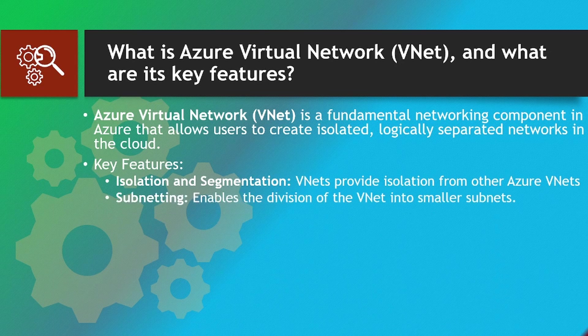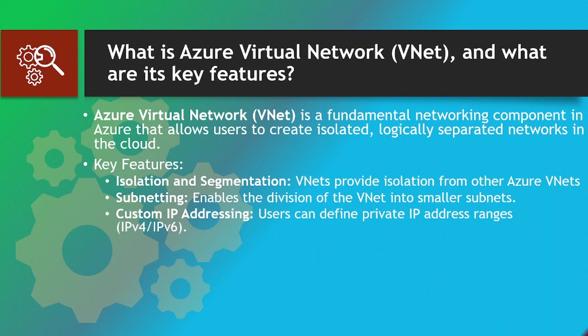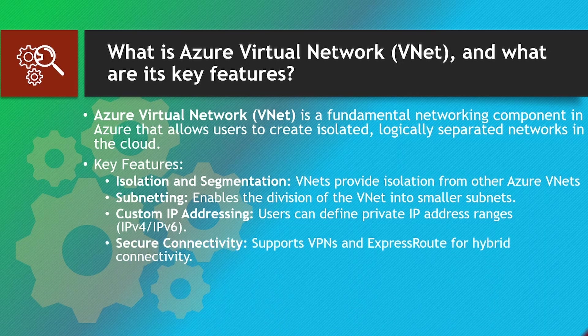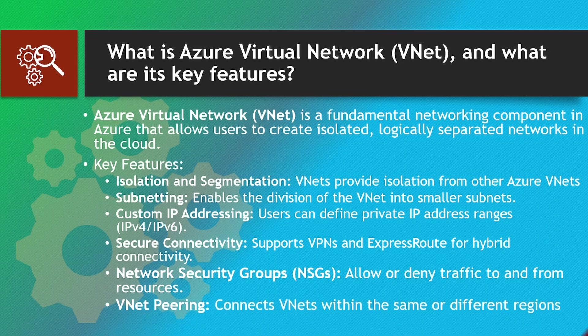Custom IP addressing: users can define private IP address ranges (IPv4/IPv6). Secure connectivity: supports VPNs and ExpressRoute for hybrid connectivity. Network Security Groups (NSGs): allow or deny traffic to and from resources. VNet peering: connects VNets within the same or different regions.